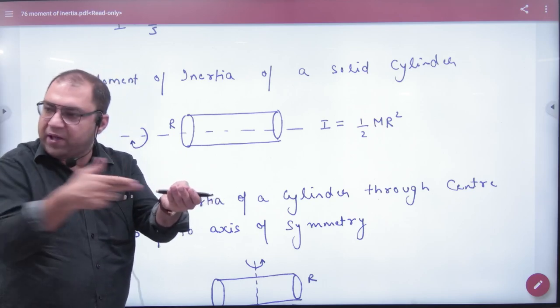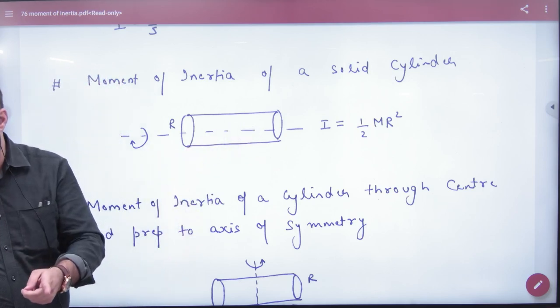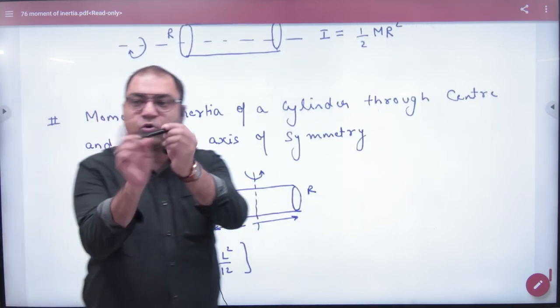Where will the axis pass? From the center. So what will be the formula? Half MR². The formula is 1/2 MR². And if this solid cylinder is like this...